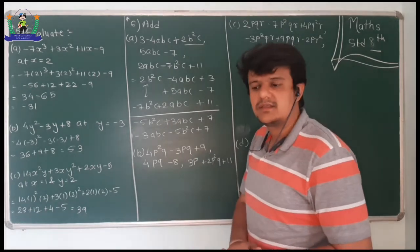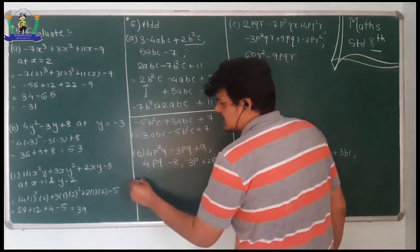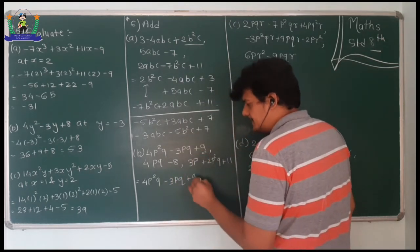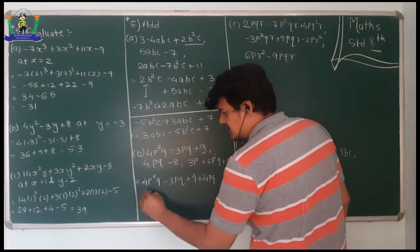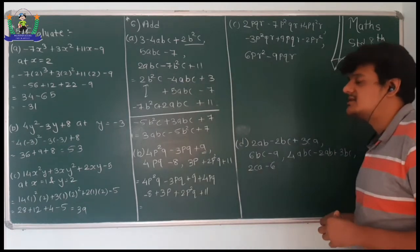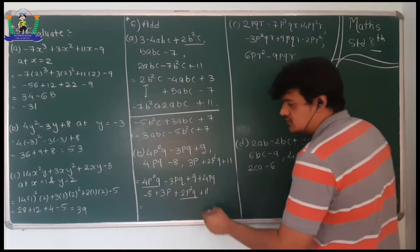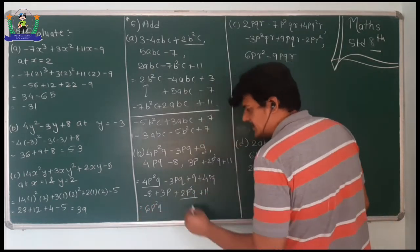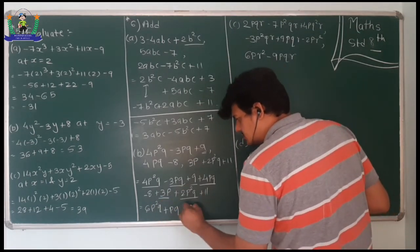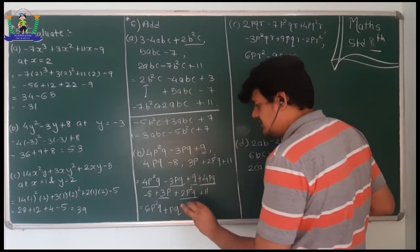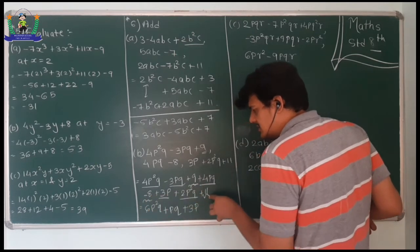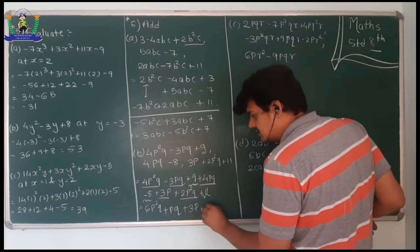Now let's apply the horizontal method for the next one. We have: 4p²q³ minus 3pq³ plus 9, plus 4pq³ minus 8 plus 3p plus 2p²q³ plus 11. Combining like terms horizontally: 4p²q³ plus 2p²q³ gives 6p²q³; minus 3pq³ plus 4pq³ gives pq³; then 3p; and constants 9 plus 11 minus 8 equals 12.